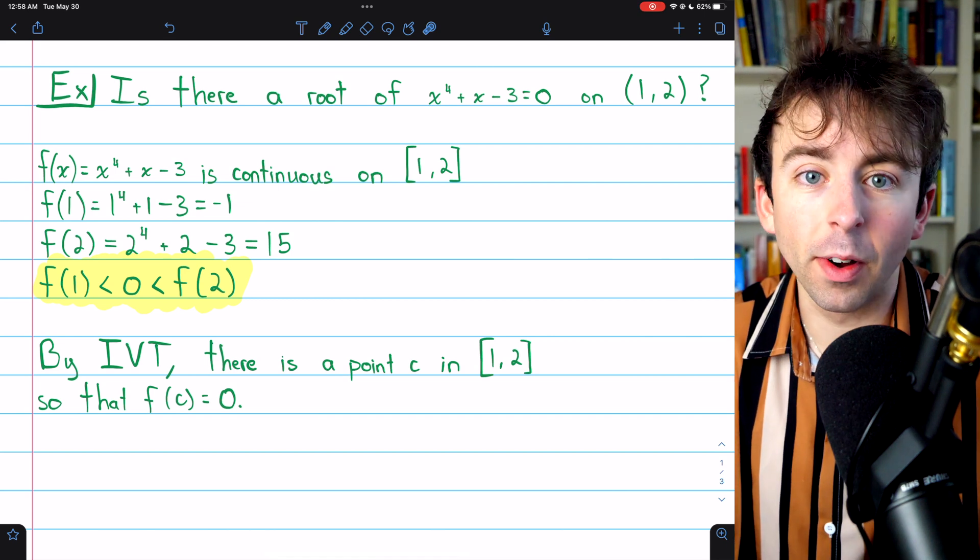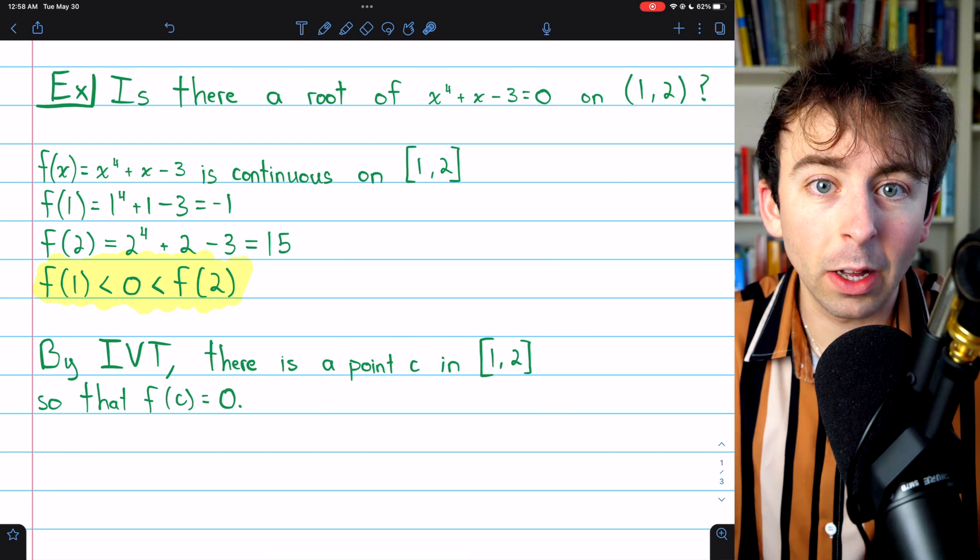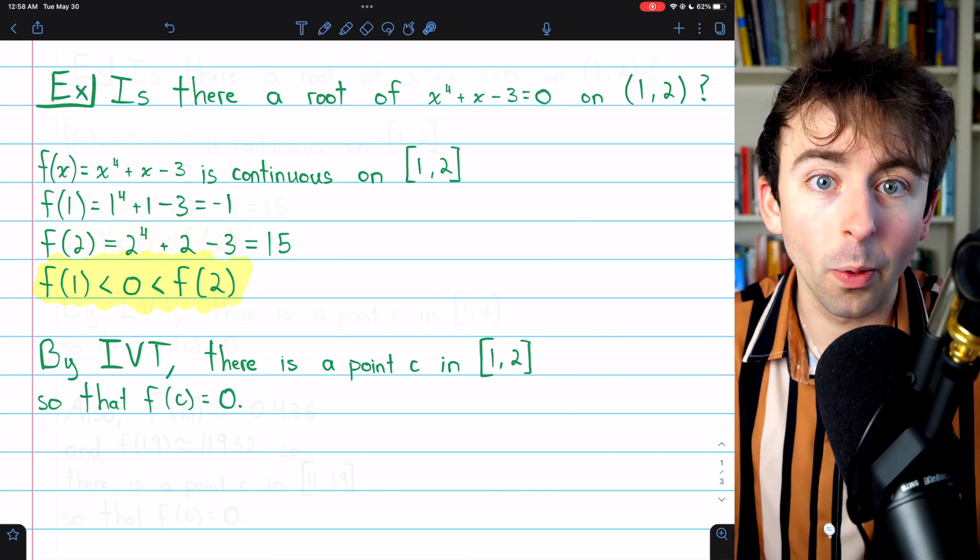1 is between those values. So at some point, the function took on a value of 1. At some point, it took on a value of 12, 13, and so on.